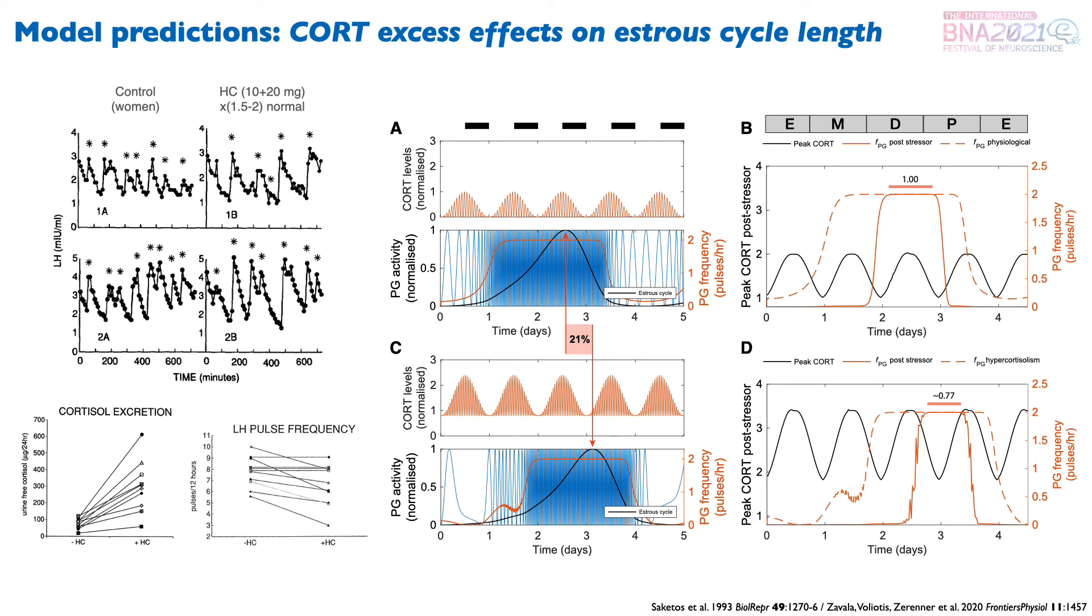With the caveat that our model was developed for rodents, we think that a next-generation model developed for humans could explore the question of how excess cortisol could induce amenorrhea or delays in the menstrual cycle in women.